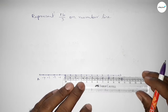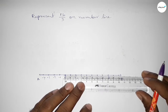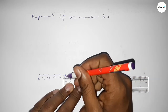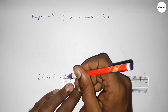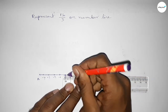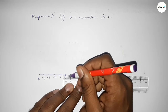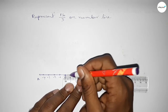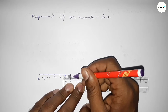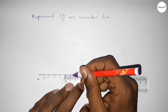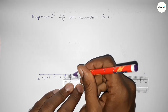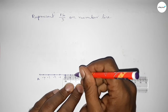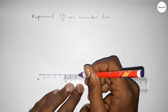Now we have to divide the distance between any two numbers into three parts approximately. Dividing the distance between zero to one — this is 0.3 something and this is 0.6 something approximately. Similarly dividing the distance between one to two — this is 0.3 something and this is 0.6 something approximately.